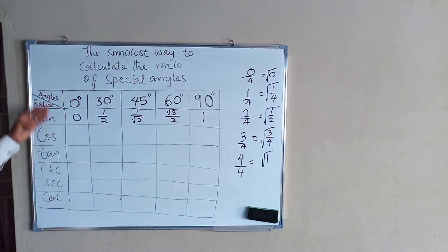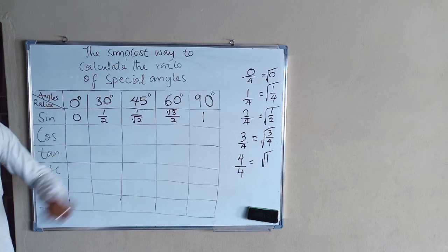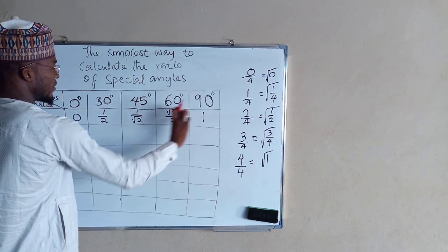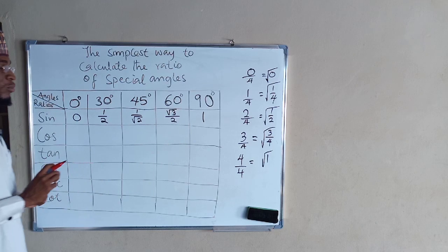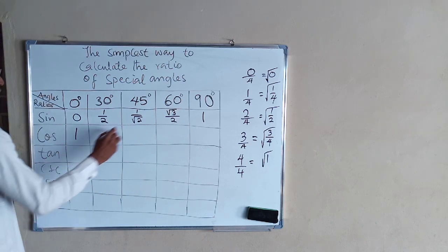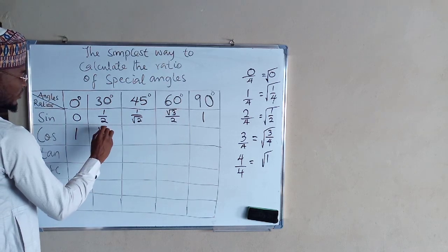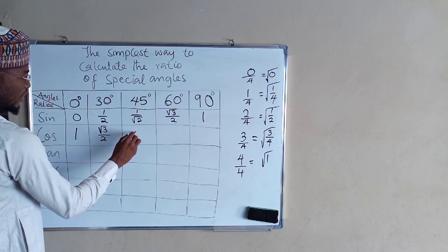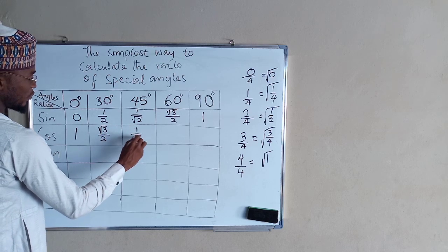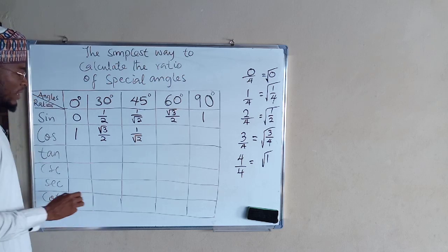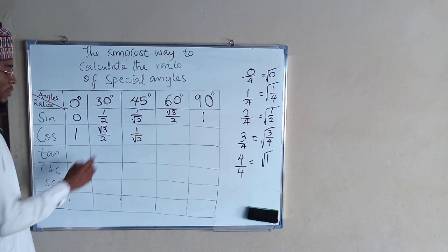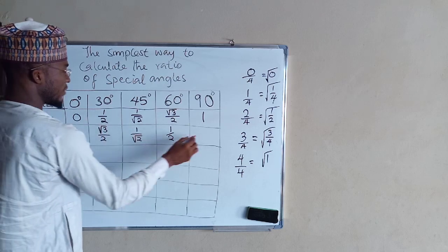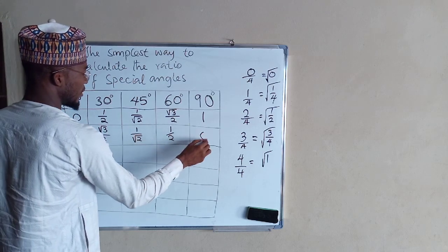Then for cosine of these special angles, you are going to take the mirror image of these numbers — reversing the sine values. So cosine gives: 1, root 3 divided by 2, 1 divided by root 2, 1 over 2, and lastly 0.